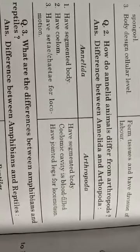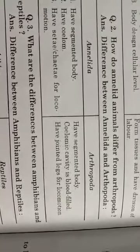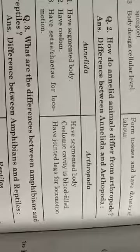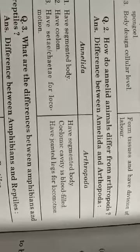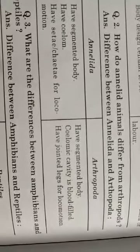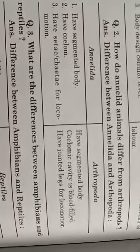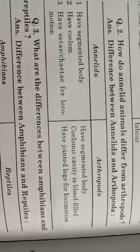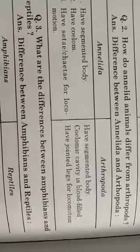Annelida have cilia for locomotion, while Arthropoda have jointed legs for locomotion. The difference between Annelida and Arthropoda: Annelida have a segmented body, Arthropoda also have a segmented body. Annelida have a coelom filled with blood, while Arthropoda have jointed legs for locomotion.